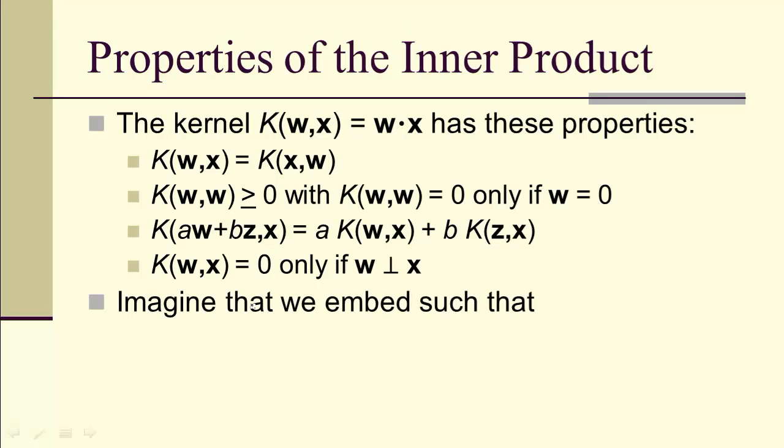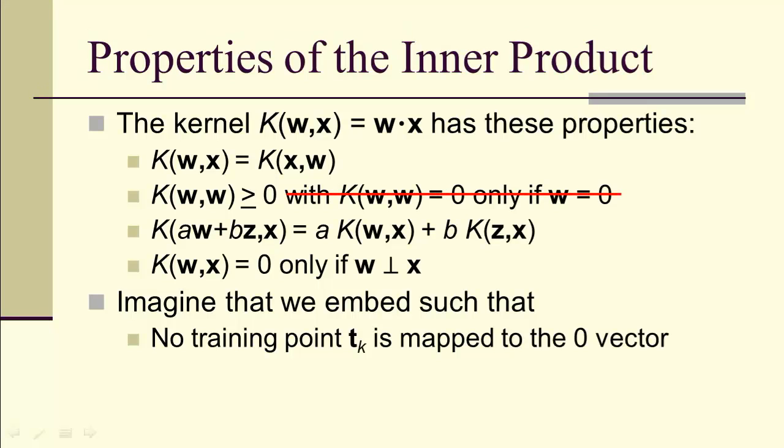We can actually get around some of these conditions because we're embedding in a high dimensional space. What we can do is say, no training point is going to be mapped to the 0 vector. So, once we do our embedding, we're going to avoid the 0 vector.